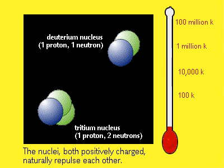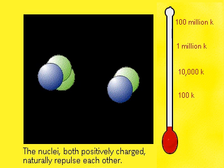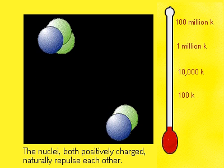Deuterium is composed of a proton and a neutron, tritium of a proton and two neutrons. The nuclei are positively charged and naturally repel each other. To overcome that resistance,